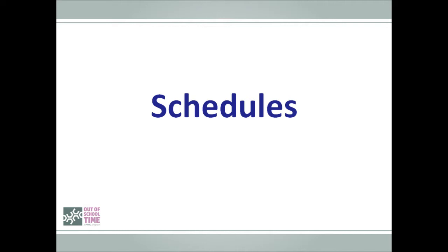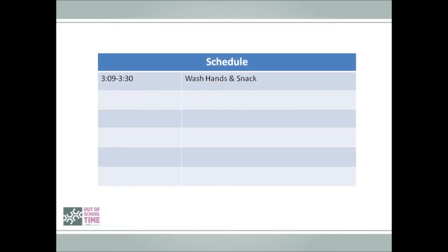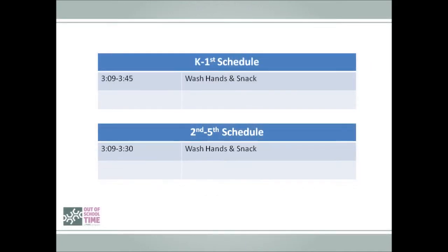When it comes to your planning process, start with anything that is absolutely unchangeable. For example, if you have to serve snack first thing because the youth arrive hungry, plug that into your schedule first. When considering the duration of each activity, again consider youth needs. Do youth need 45 minutes for snack? Probably not. This is where routines can help maximize the program day. Maybe the kindergarteners eat more slowly than the older youth. Since we are basing our schedule on the developmental level and needs of the youth, it probably doesn't make sense for kindergarteners and fifth graders to follow the exact same schedule.